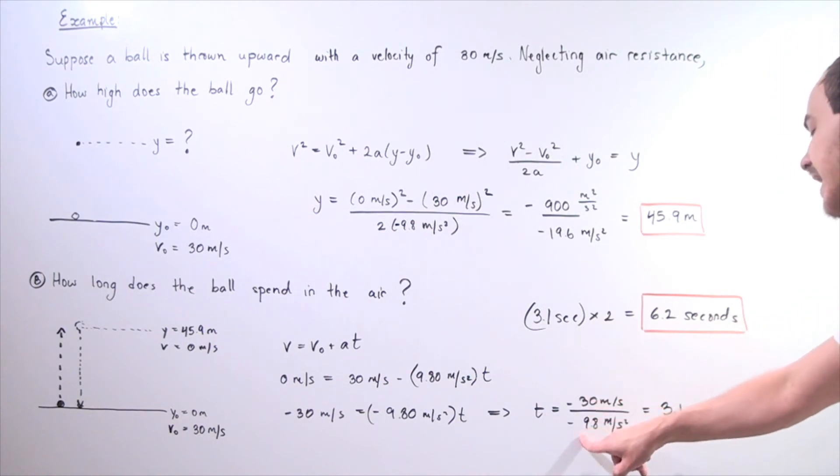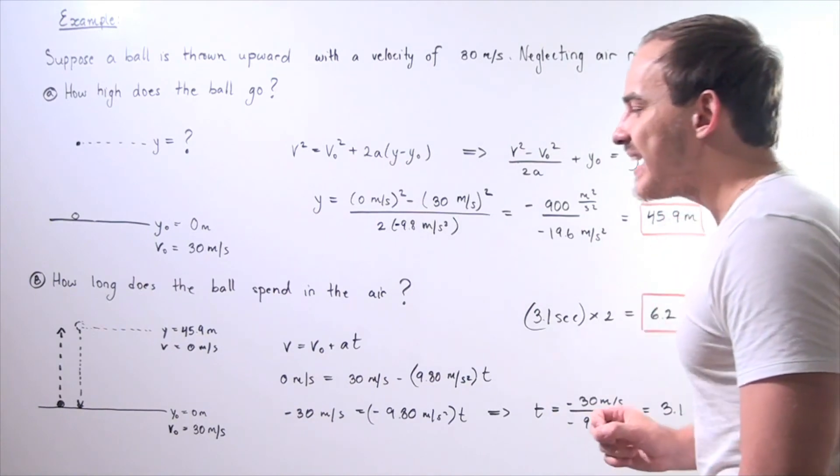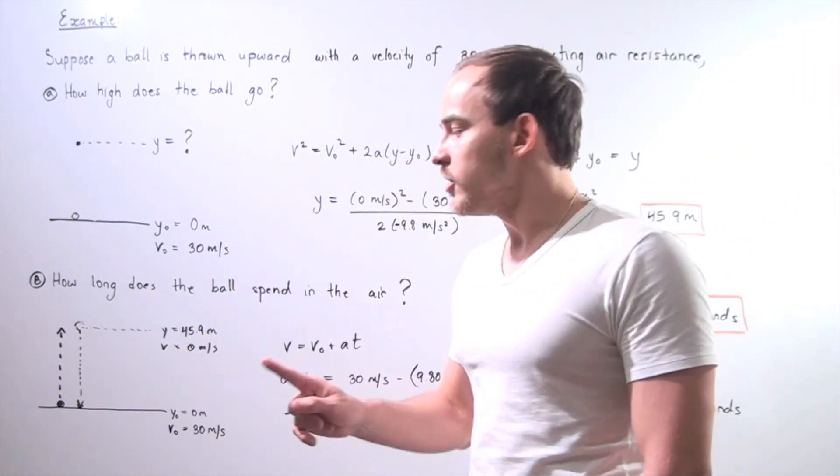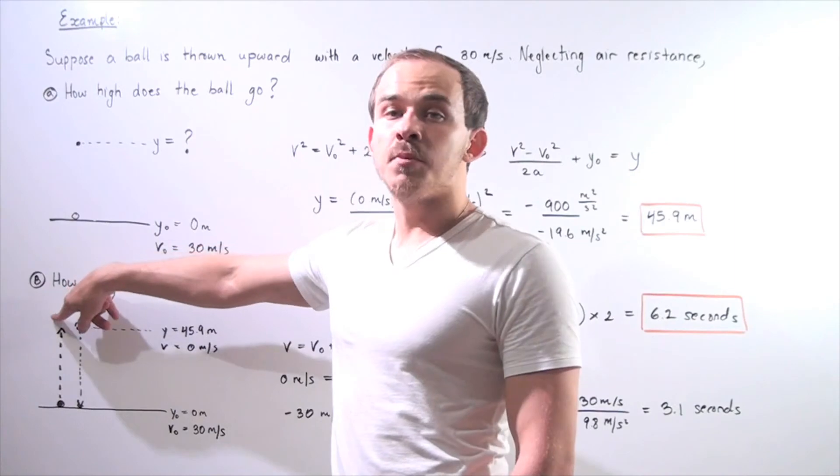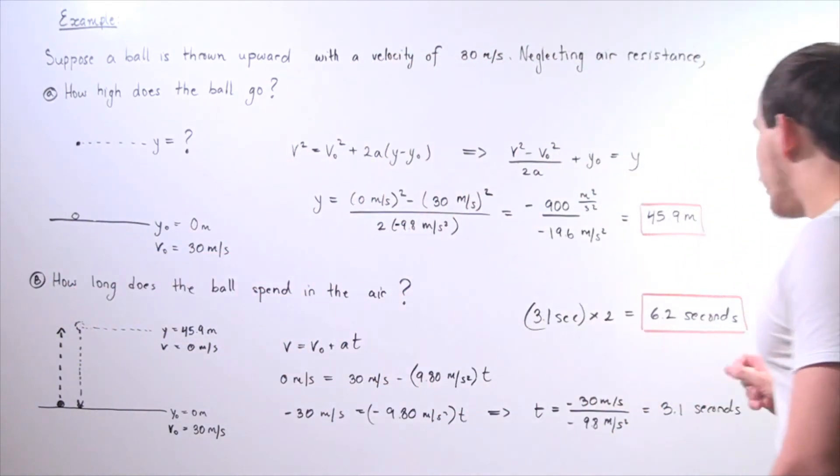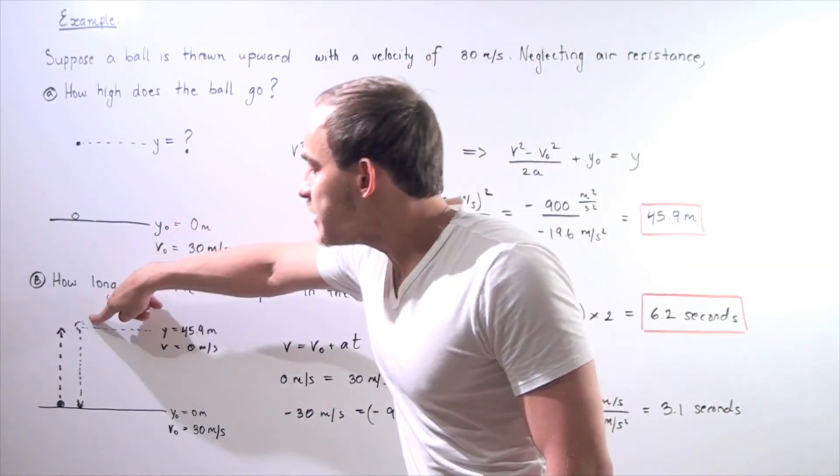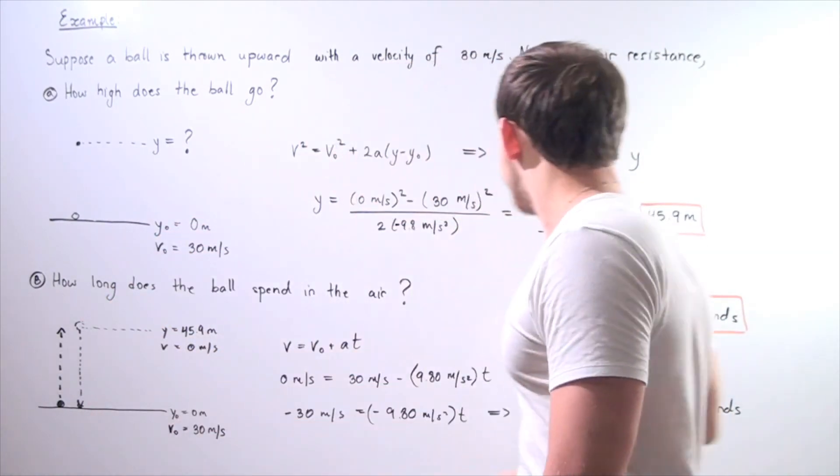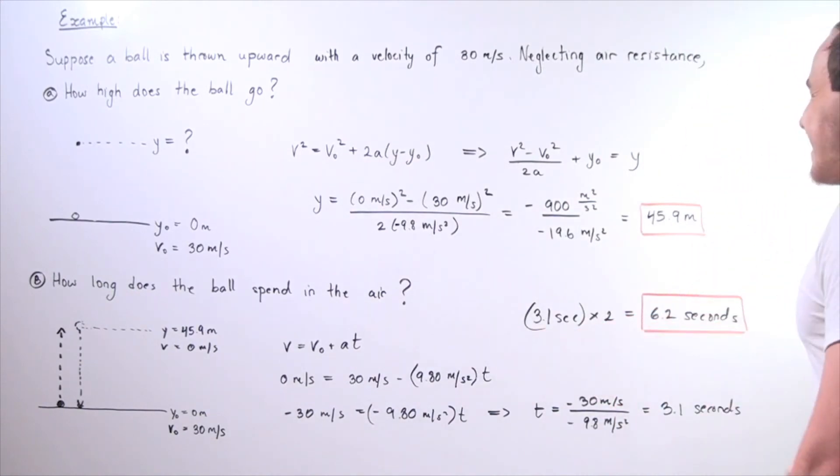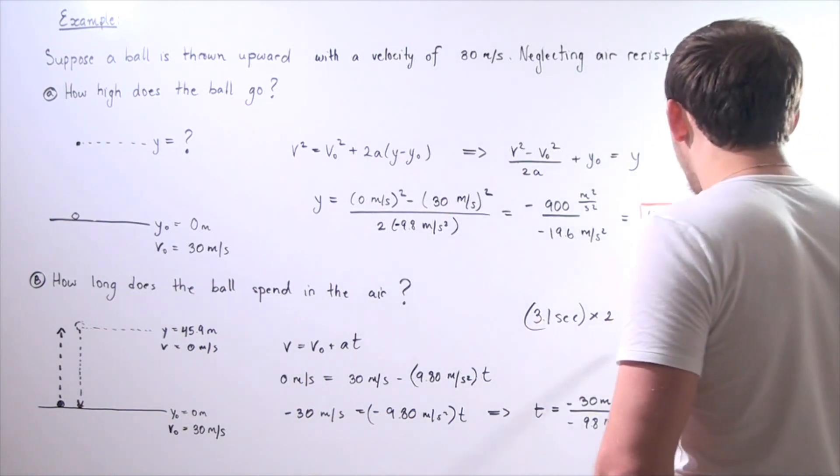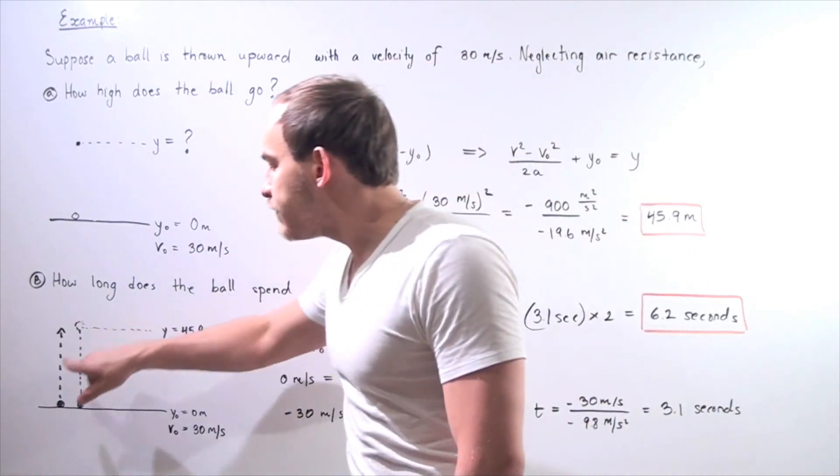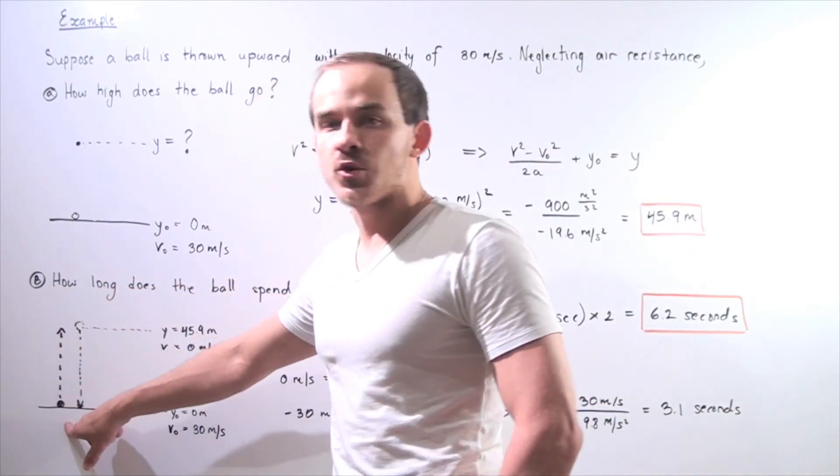30 divided by 9.8 is approximately positive 3.1 seconds. So it takes the ball 3.1 seconds to travel from our ground to the highest position, and then it takes that same amount of time to travel from that position back to the ground. So we get 3.1 seconds multiplied by 2, which gives us approximately 6.2 seconds. So it takes the ball 6.2 seconds to begin from our ground, travel upward, and back to the ground.